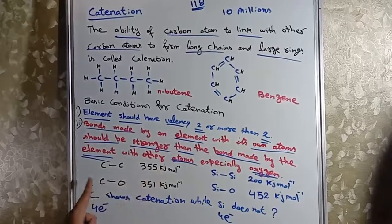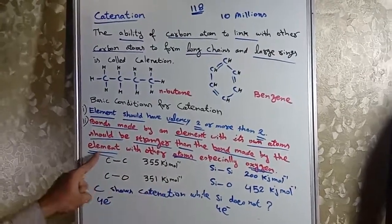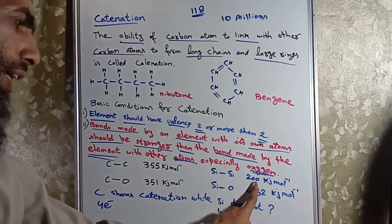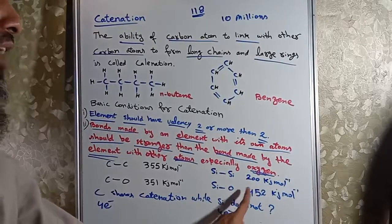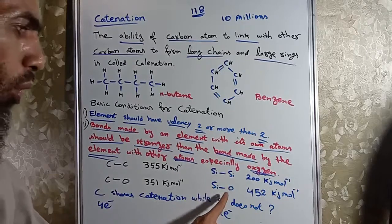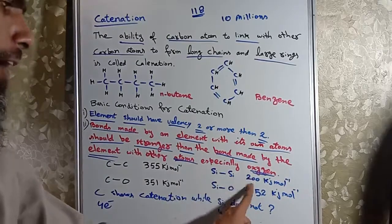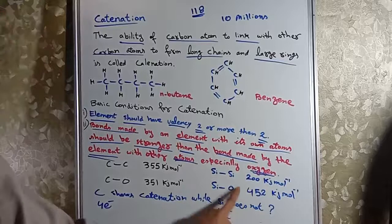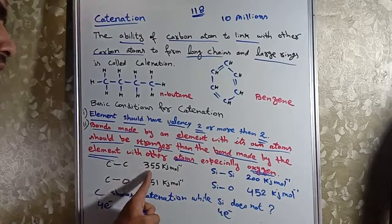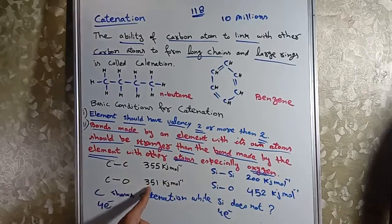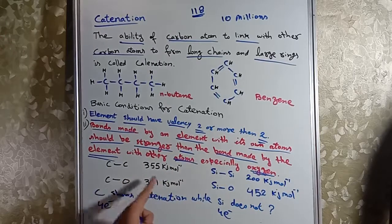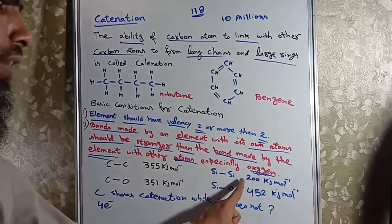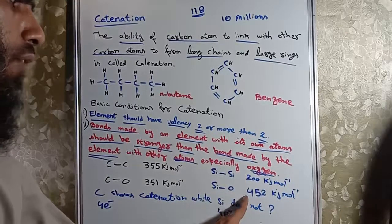Jabke carbon oxygen, other atom, so weak. Carbon carbon bond energy 355 kilojoules per mole. Silicon silicon bond energy 351 kilojoules per mole. Carbon oxygen bond energy 360 kilojoules per mole. Silicon oxygen bond energy 452 kilojoules per mole.